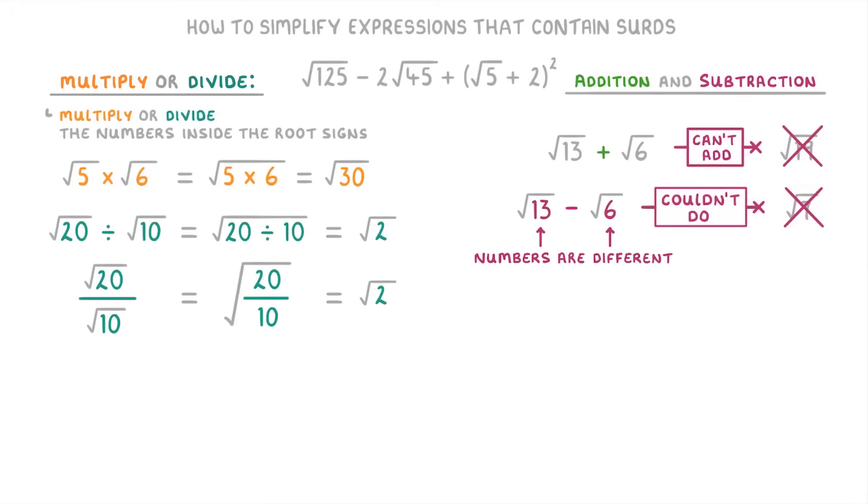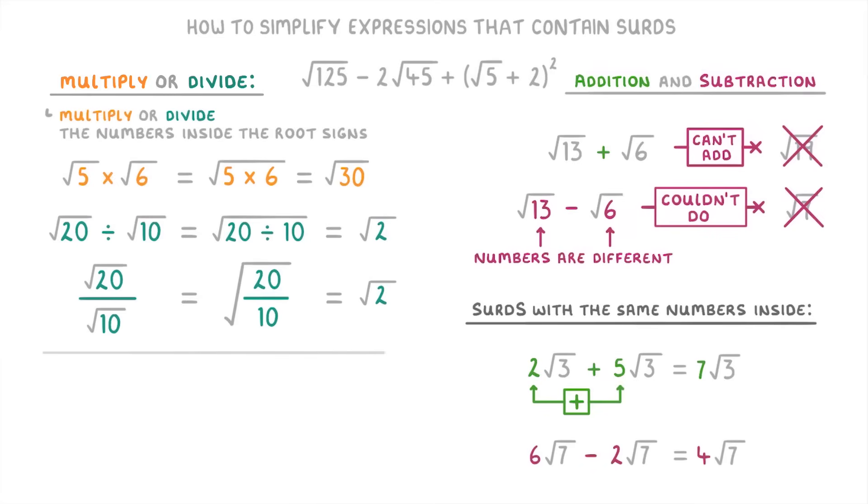This is because the numbers inside the surds are different, so you can't add or subtract them. But if you had surds with the same numbers inside, like 2√3 plus 5√3, then you could add them together by adding together these numbers in front, so this would give us 7√3. The same thing goes for subtraction, so 6√7 minus 2√7 would be 4√7.